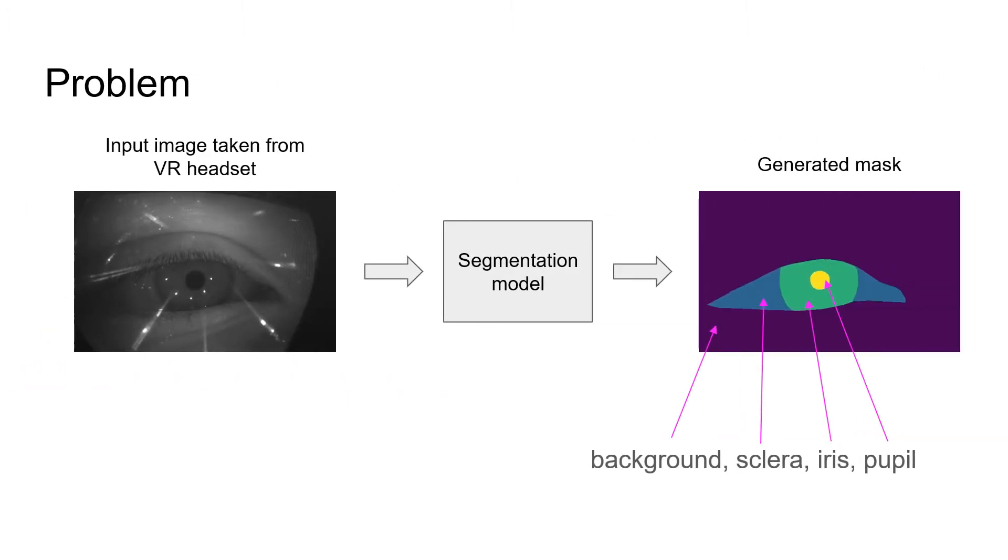The main goal was to train such a model which takes the image of an eye taken from a VR headset as an input and generates the mask by four classes: background, sclera, iris and pupil. Let's deep dive into the dataset that we are provided and analyze it.